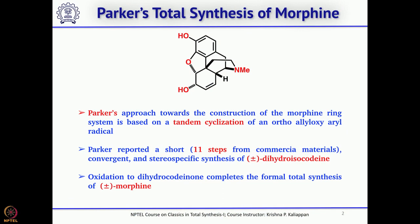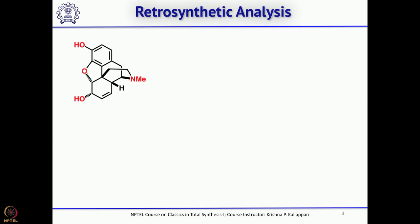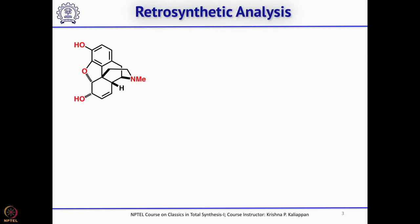In Parker's total synthesis, he used a tandem cyclization where you generate a radical. That radical undergoes 6-endo and when it comes back, it removes the phenylthio radical. Overall he took about 11 steps to complete the total synthesis of morphine from commercially available isovanillin. Let us see his retrosynthesis and how he planned this synthesis using the key radical cyclization reaction.